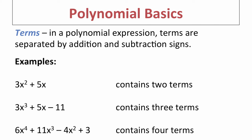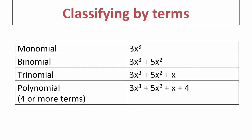For example, 3x squared plus 5x contains two terms because there's one plus sign in the middle. 3x to the third plus 5x minus 11 contains three terms because there is a plus and a minus sign. And 6x to the fourth plus 11x to the third minus 4x squared plus 3 has four terms because there are two plus signs and one minus sign.